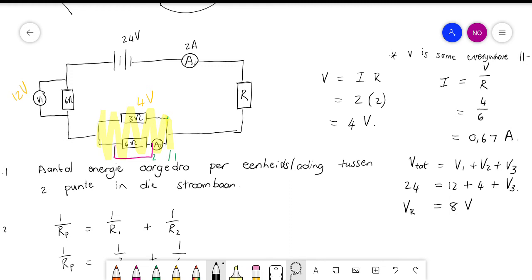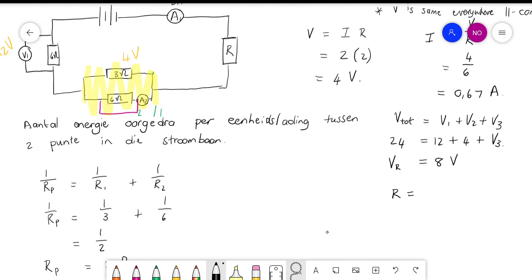So if I know the potential difference through there, what is the current flowing through there? 2 ohm, no, 2 ampere. So then I'm going to say the resistance is equal to the potential difference divided by the current. Here we go.